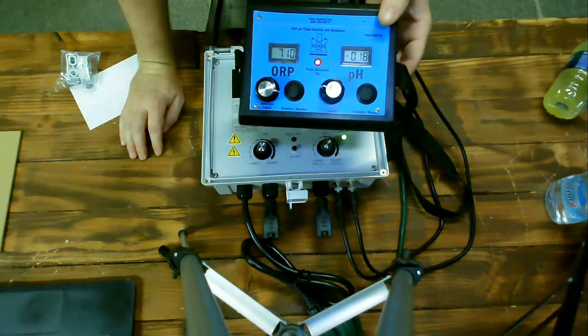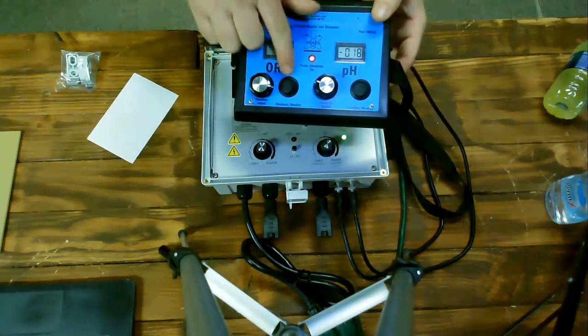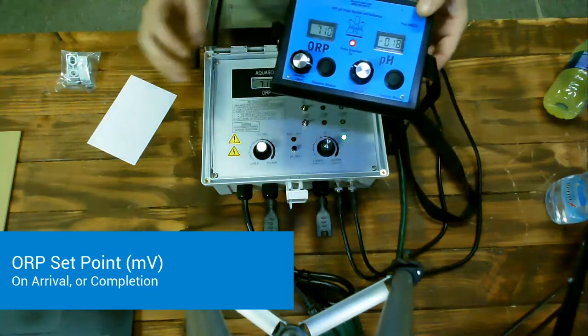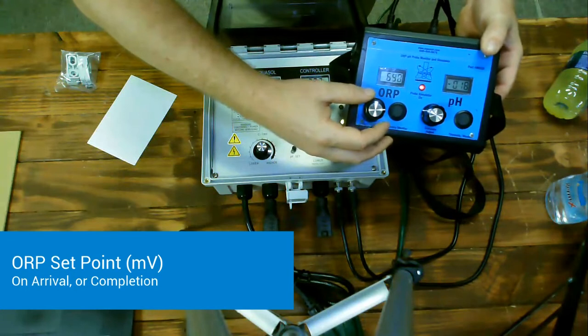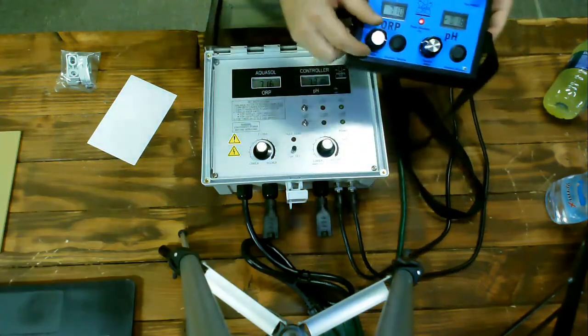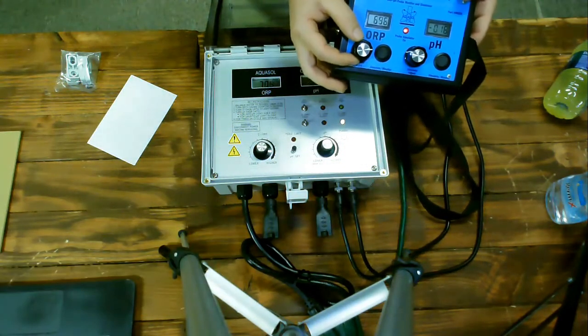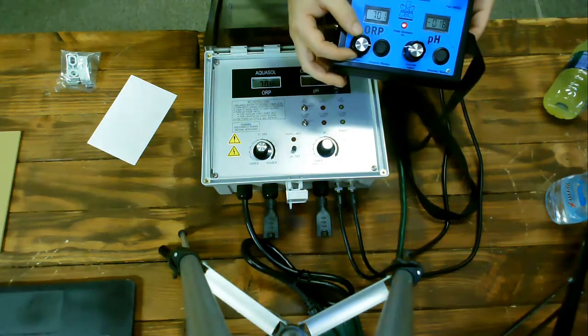I'll begin with the ORP channel. By turning the knob on the ORP channel of the signal generator, I'm able to simulate a signal until I find the point where the ORP feed channel is turning on and off. Here we find that it's turning on and off at 700 millivolts.